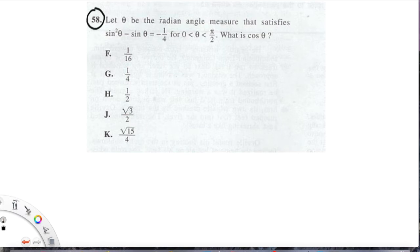Now it says, let theta be the radian angle measure that satisfies sine squared theta minus sine theta equals negative one-fourth, for theta is greater than zero but less than pi over two. What is cosine theta? If this all freaks you out and you don't feel like you can solve this with some trig identities, then listen up, we have a new way of doing this for you.